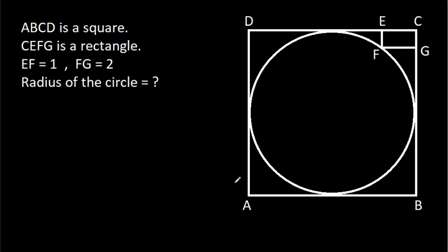In this video, we have been given that ABCD is a square and CEFG is a rectangle, where EF is 1 and FG is 2. We need to find the radius of this circle.